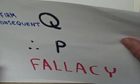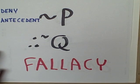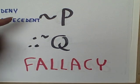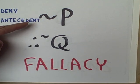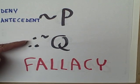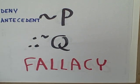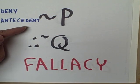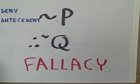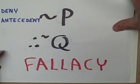What about denying the antecedent? Not P — can we therefore conclude not Q? No, this is also a fallacy. It's the fallacy of denying the antecedent. If P doesn't exist, there may be some other way that Q could still exist.